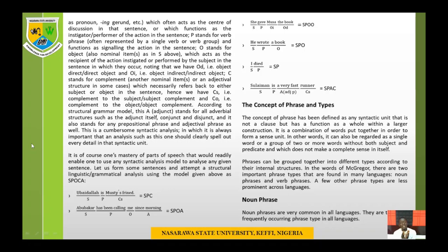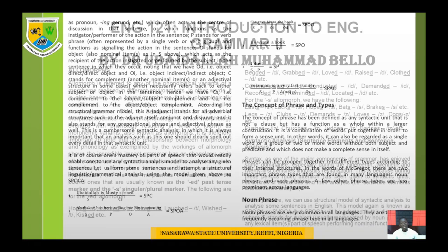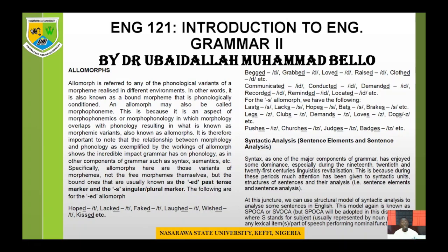S stands for subject, P stands for predicate, O stands for object, C stands for complement, and A stands for adjunct. Not every sentence must have all these elements. However, there are two major obligatory elements: S and P, or S and V. The others — O (object), C (complement), and A (adjunct) — are optional, depending on what the speaker or writer intends to express.